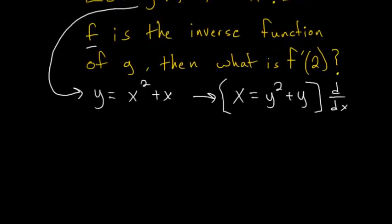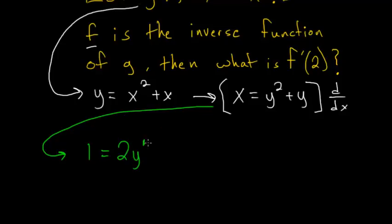Taking the derivative of this, the derivative of x is just 1, and we have to use the chain rule for each of these functions of y. The derivative of the outside of this is 2y to the first, and taking the derivative of the inside with respect to x, we get dy dx.